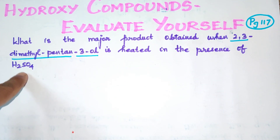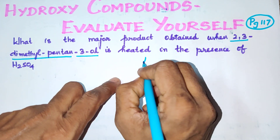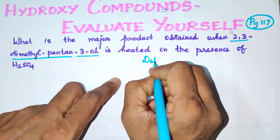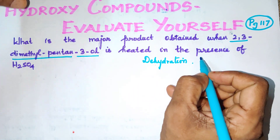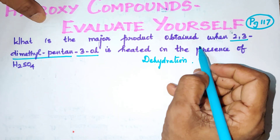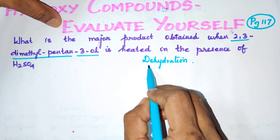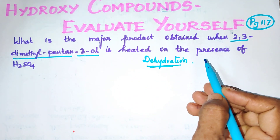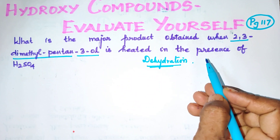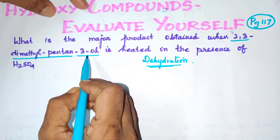When this alcohol is heated in the presence of H₂SO₄, a dehydration reaction occurs. We need to predict the major product. Since it is heated with H₂SO₄, a dehydration reaction will take place.